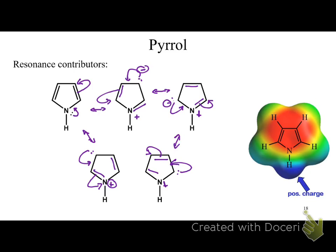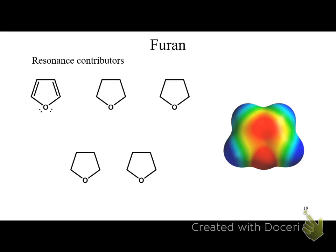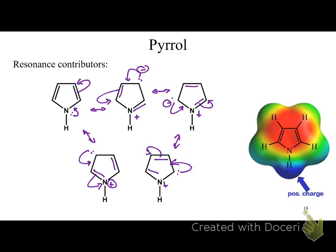Looking at the electrostatic potential map of pyrrole, you'll notice it's blue here and the red is shifted in the upward direction. That's because the nitrogen's lone pair pushes into the ring, putting more electron density into the ring. At the same time, it creates a positive charge on the nitrogen. So you end up with more positive charge on one end and more negative charge on the other, giving the molecule a strong dipole pointing the opposite way than you might predict.